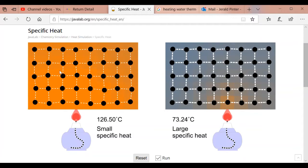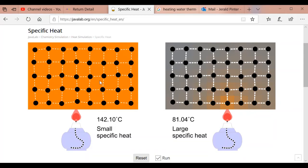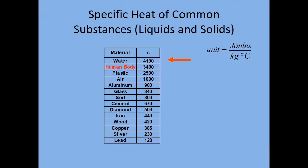As we keep running the simulation, the material on the left shows a lot of thermal energy and a lot of motion of the atoms, while the material on the right shows relatively little. This is a table of the specific heat of some common substances — liquids and solids — organized from highest specific heat down to lowest. Notice at the top is water, which has a very high specific heat: 4,190 joules per kilogram per degree Celsius. It takes 4,190 joules of heat to raise one kilogram — one liter of water — by just one degree Celsius.